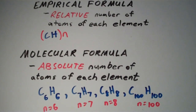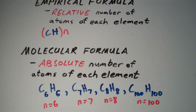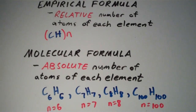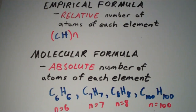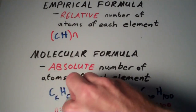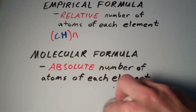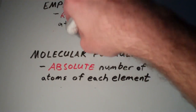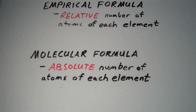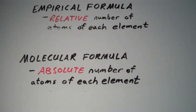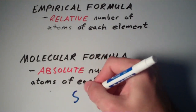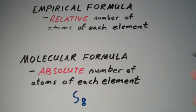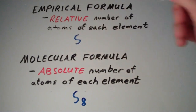It's always possible, given a molecular formula, to reduce it down to its empirical formula. For another example, suppose we have the molecular formula S8. The empirical formula of S8 is just S, or S1.